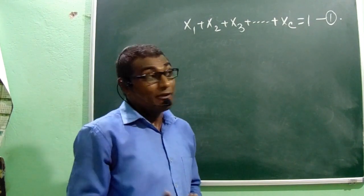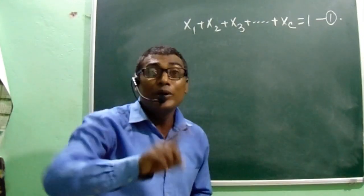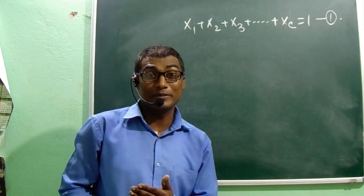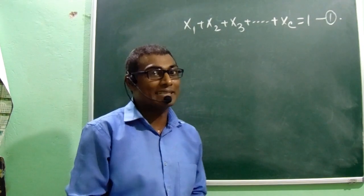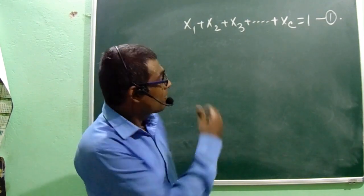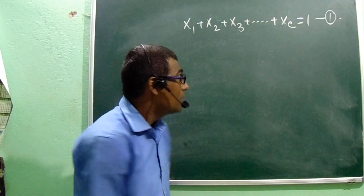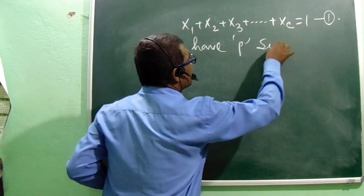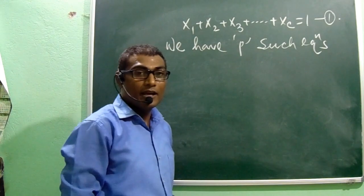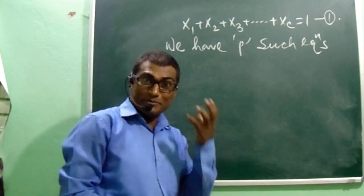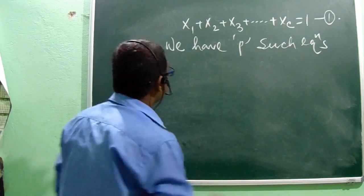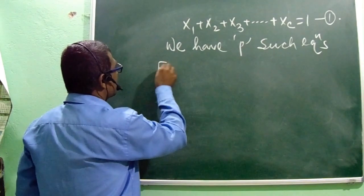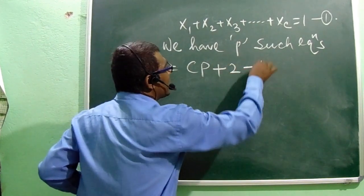From all P phases, we need not know the mole fraction of one component per phase — that means we must subtract P from the total number of variables. We have P such equations, so we subtract P. The reduced formula becomes F = CP + 2 - P.